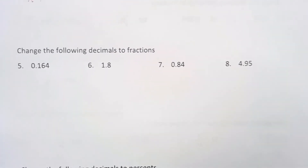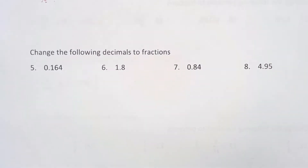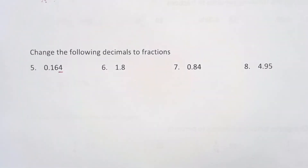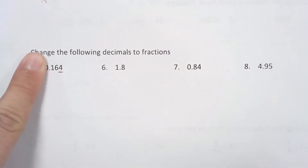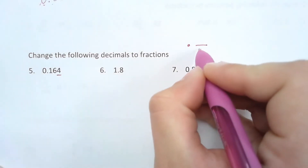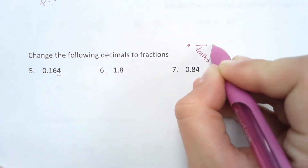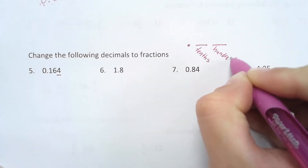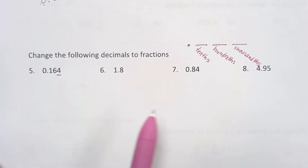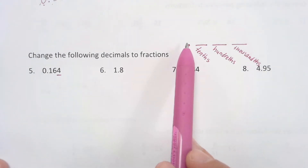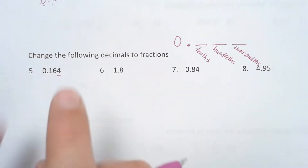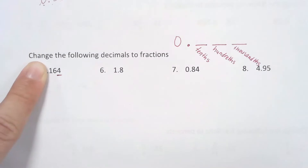Now let's go the opposite way — from decimals to fractions. When you are converting decimals to fractions, you need to look at the decimal and look at the place value it's in. You're only looking at the numbers behind the decimal point. Our first position is the tenths place, our second position is the hundredths, and the third is the thousandths. When converting decimals to fractions, I'm looking at the decimal point and looking at my very last number to see what place value that number is in.